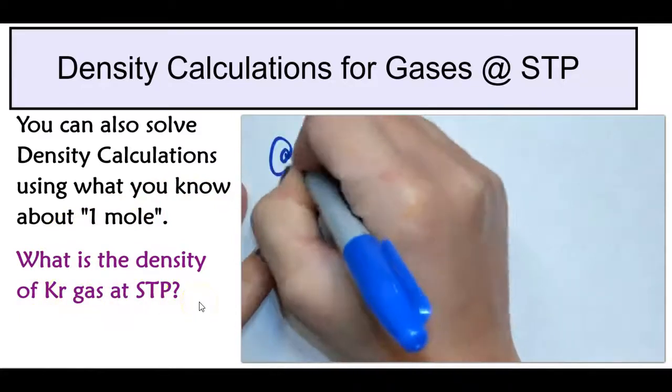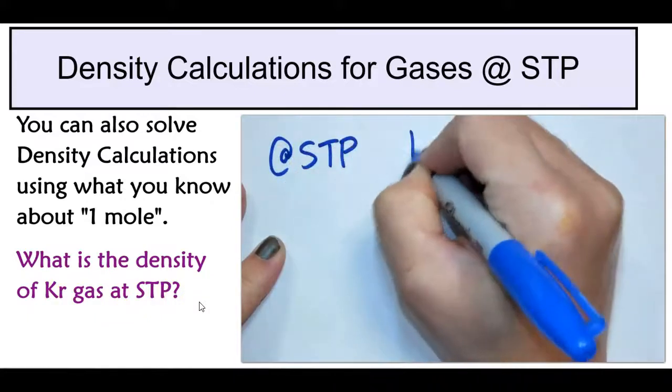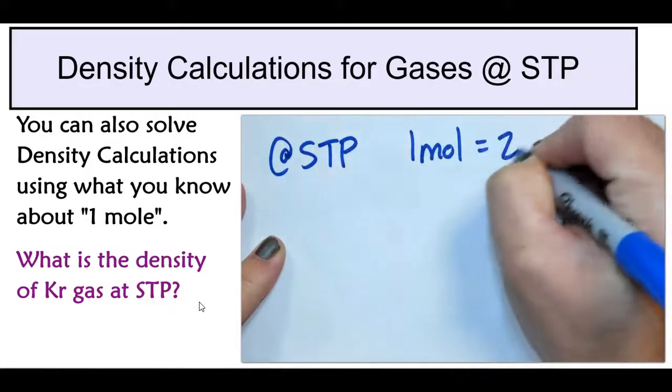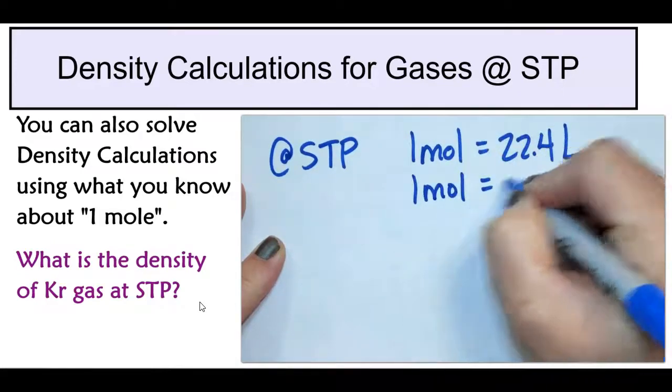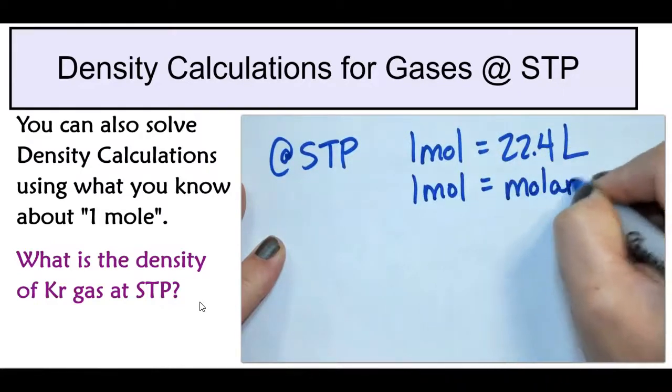What we know at STP is that one mole is equal to 22.4 liters and that one mole is equal to the molar mass from the periodic table.